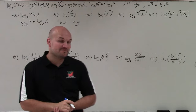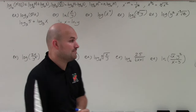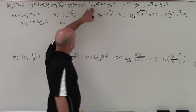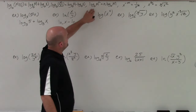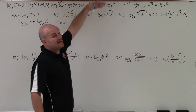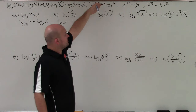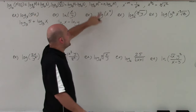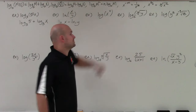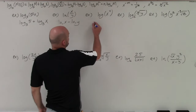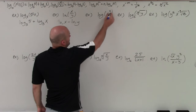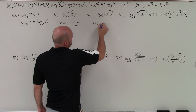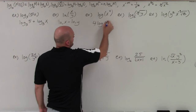The last major property is the power rule. The power rule of logarithms states that if you have a logarithm of base b of m raised to the n power, you can rewrite that as the product of that power times your logarithm. So we take the 4 and rewrite it in front, giving us 4 log x.